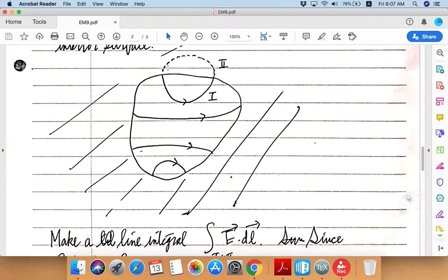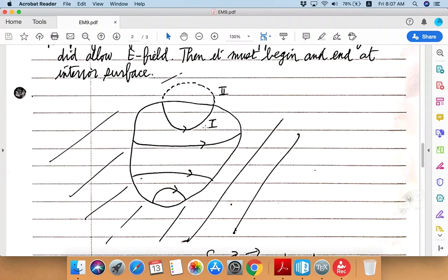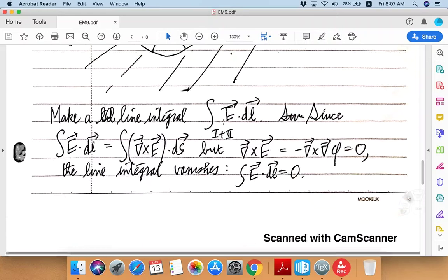So if the line integral along the path two has to vanish, and then the line integral along the combined path one and two has to vanish, that would only mean that the line integral along the path one has to vanish.